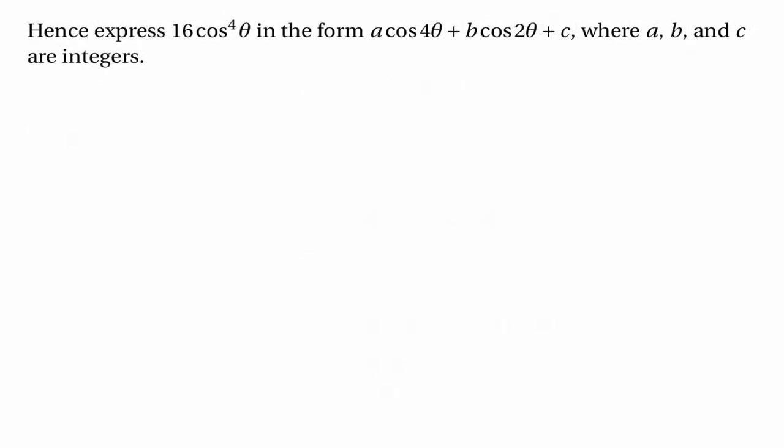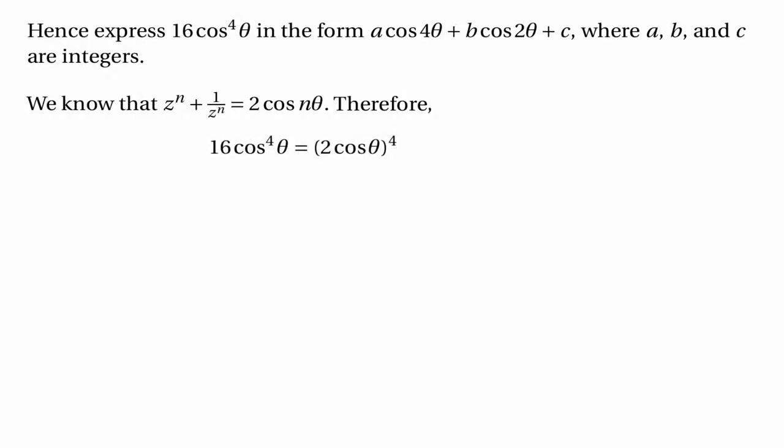The next part of the question tells us to use this fact to express 16 cos⁴θ in the form something times cos 4θ plus something times cos 2θ plus something. We're going to use what we just proved. Note that 16 cos⁴θ is the fourth power of 2 cos θ, and 2 cos θ is z plus 1 over z. So what we've got is the fourth power of (z + 1/z) according to the rule we just proved.